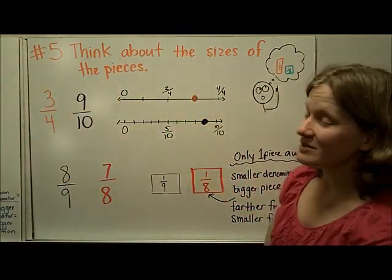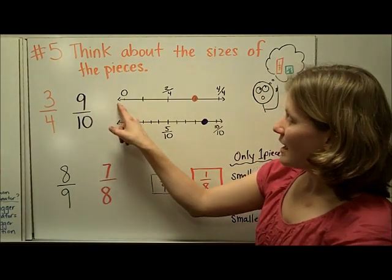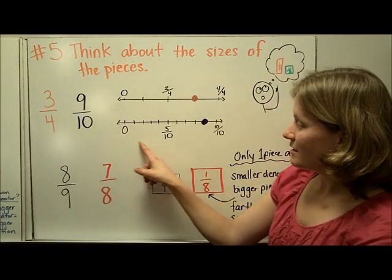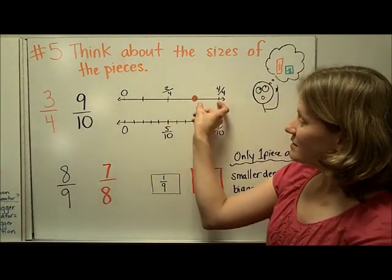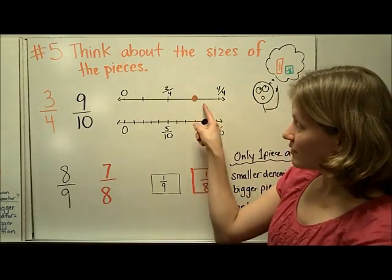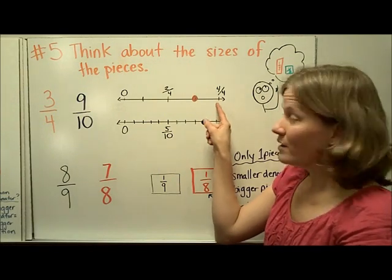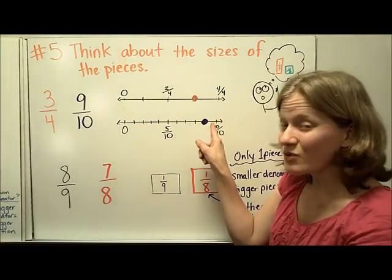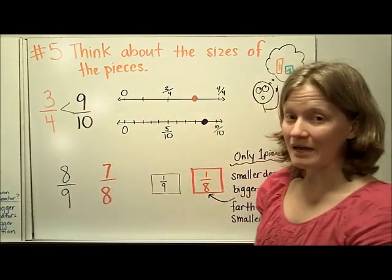The fifth and final strategy is to think about the size of the pieces. We have three-fourths and nine-tenths. Both fractions are only one piece away from being at one whole. Since fourths have a smaller denominator, they are bigger pieces, meaning a bigger distance away from one whole. Tenths have a smaller distance to get to one whole. So if you have just a short distance to get to one whole, that is the bigger fraction. So three-fourths is less than nine-tenths.